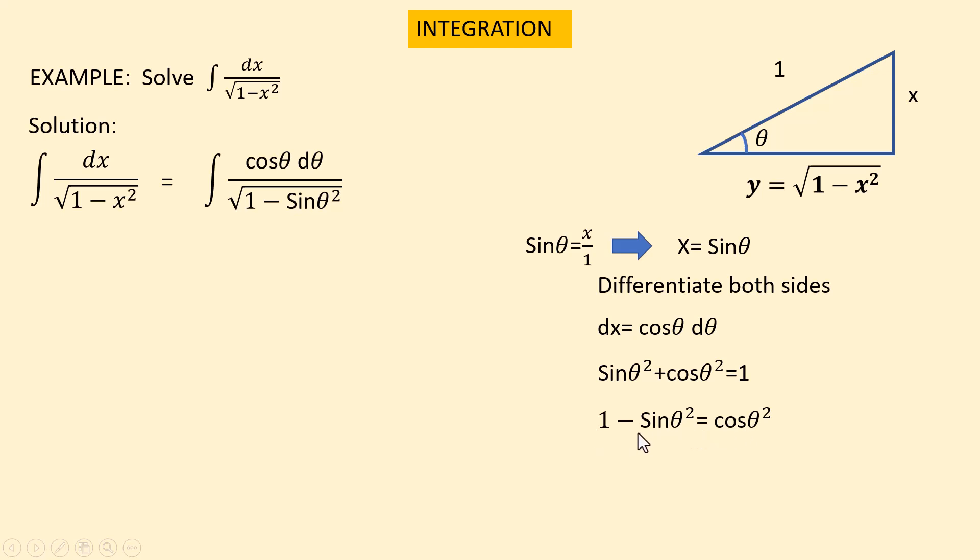Now we can substitute 1 minus sine squared theta by cosine squared theta in this integral. It becomes the integration of cosine theta d theta, and we put cosine squared theta instead of 1 minus sine squared theta.